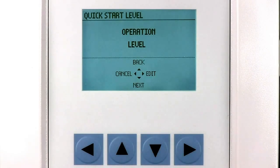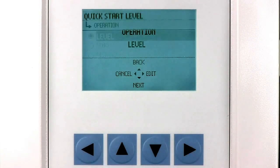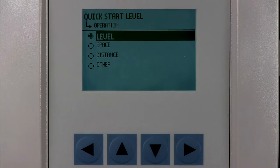The operation parameter defines the measurement mode used to calculate the displayed value and the corresponding milliamp output. There are three choices for this parameter: level, space, or distance.